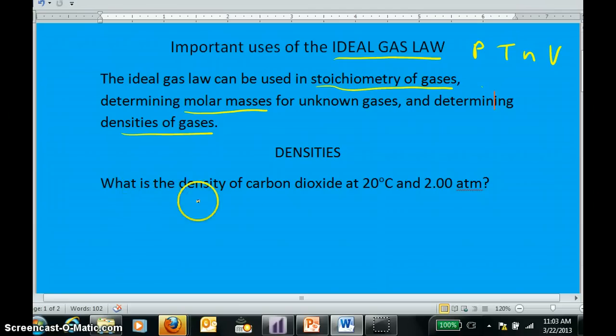This problem says, what is the density of carbon dioxide at 20 degrees C and 2 atmospheres of pressure? Well, the first thing I would want to do is write down the things that are not stated in the problem. Yes, we have a temperature of 293 kelvins and a pressure of 2 atmospheres. But the very fact that we're told we have carbon dioxide means we have a molar mass, 44.0 grams per mole. So I like to have that in front of me when I go to do the problem.